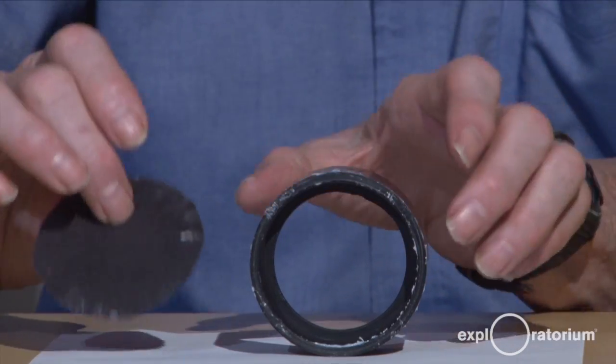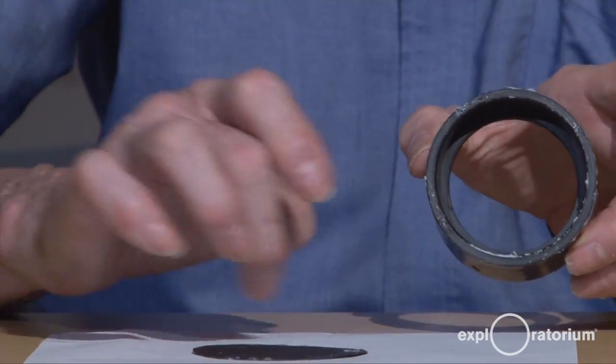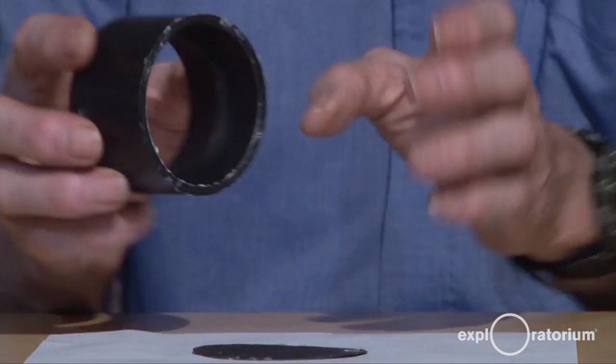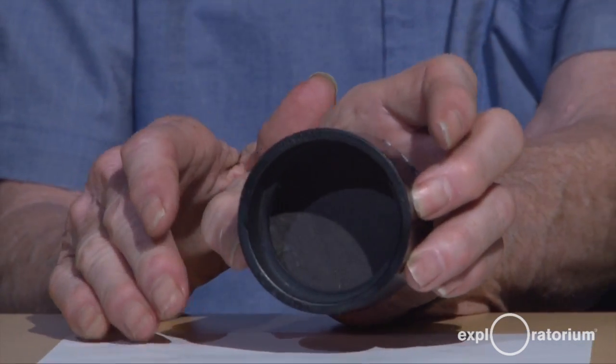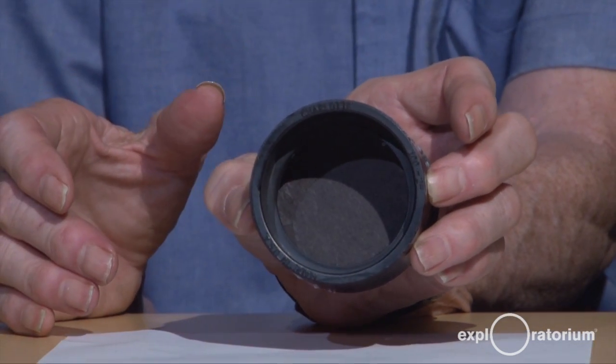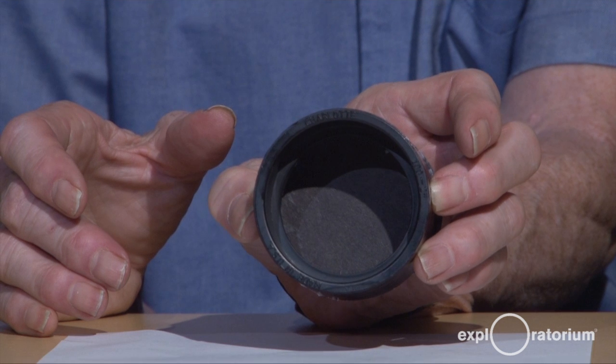So I cut out a disc of black paper. I put glue around the edge, a glue stick around the edge. I just press down, and I end up with my own homemade can, black on the edges and black on the back, ready to make a soap film.